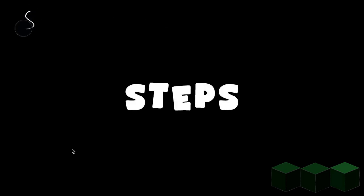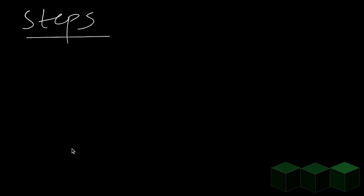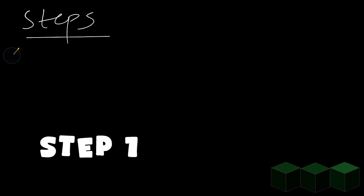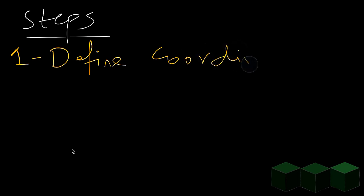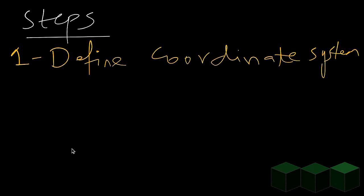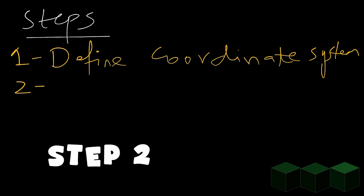First of all, let us have a quick overview of the steps we are going to follow, because it really helps us to clarify the path ahead. The first important step is to define the coordinate system — we'll define our x, y, and z axes and our origin. While defining the region, make sure that the plane is not passing through the origin region.